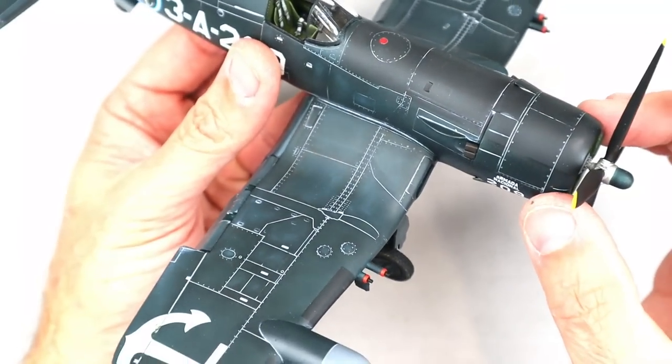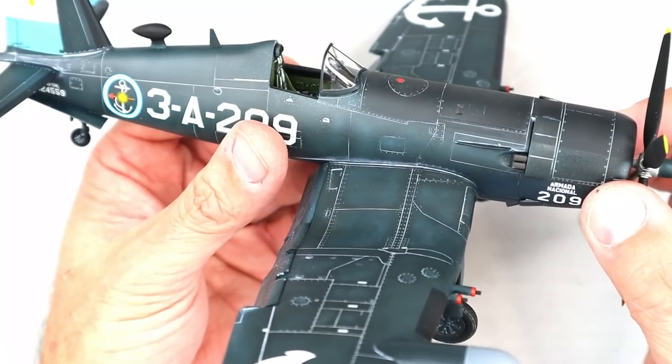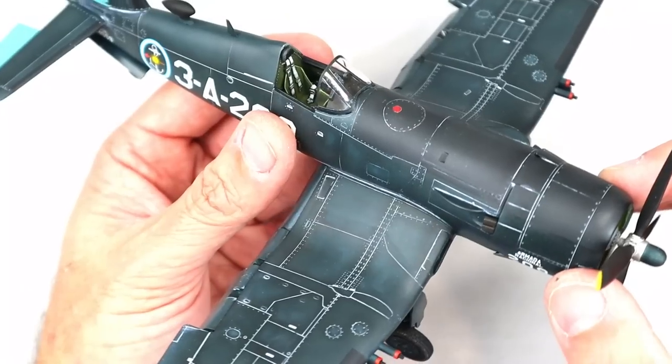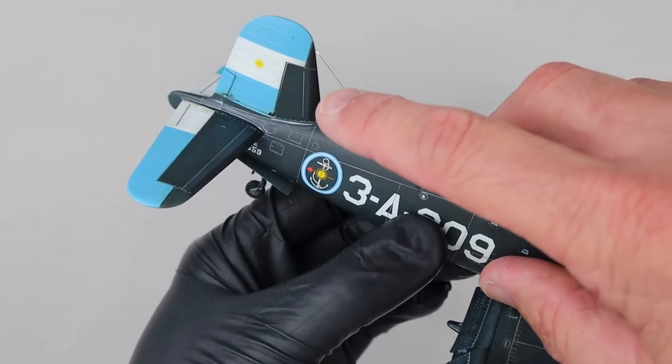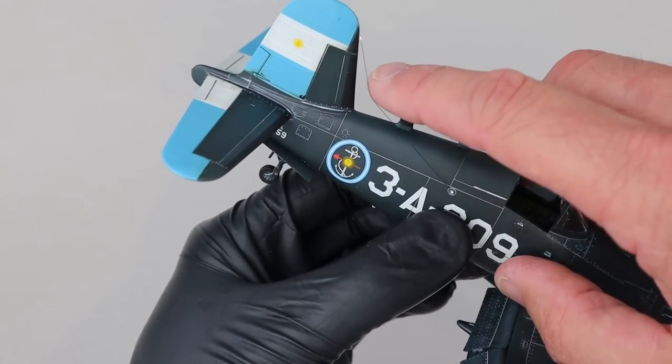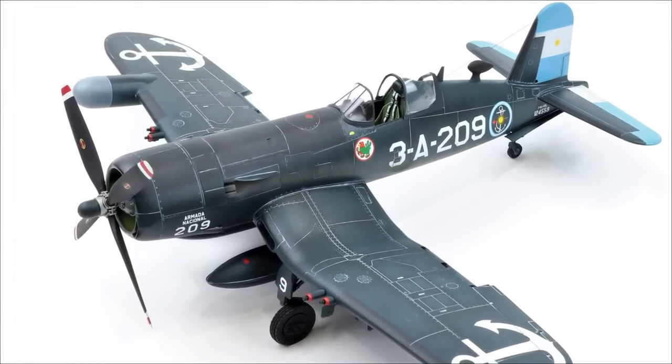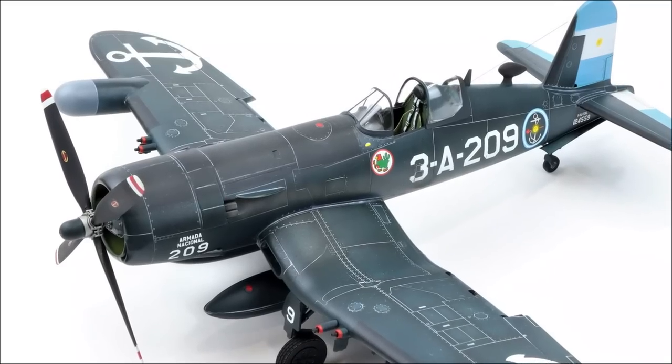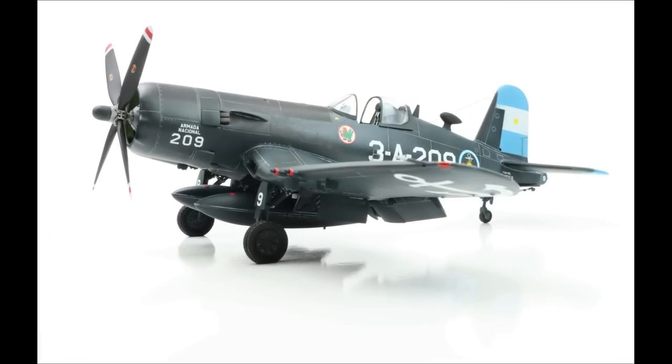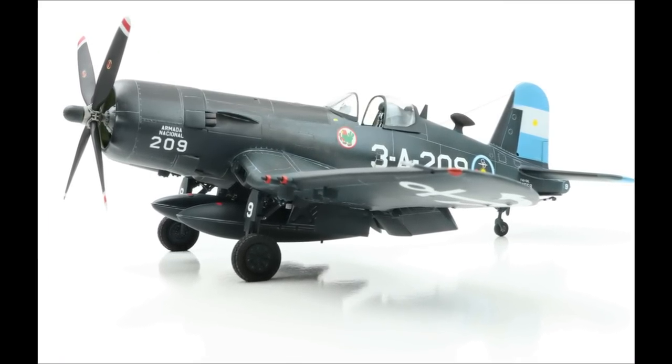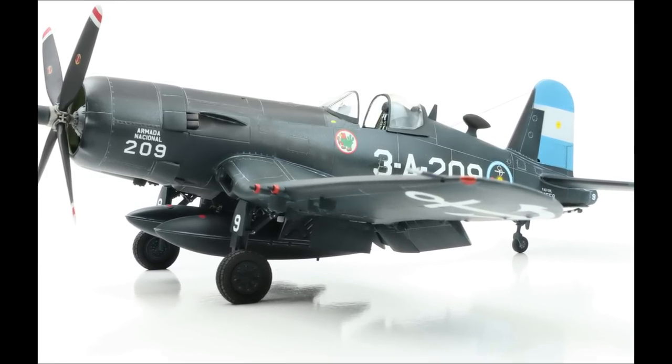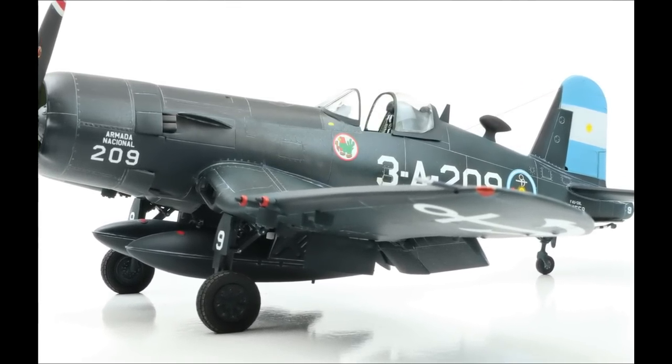I added all of the smaller details including the various antenna, wheels, pitot, and antenna wire. Hasegawa's 1/48th F4U-5 is an excellent kit. Finishing it in the Argentinian markings helps to make it a bit more colorful and certainly more unique. I hope that you enjoyed this Corsair full video build and I hope that it inspires you to tackle a build of your own.